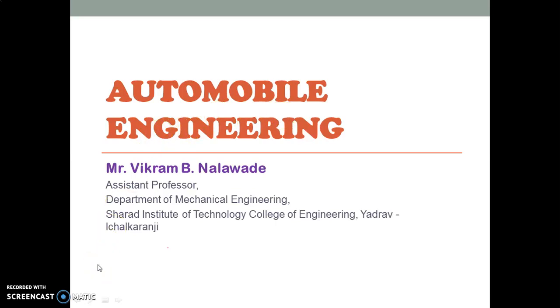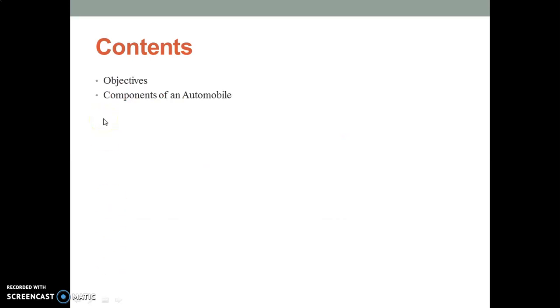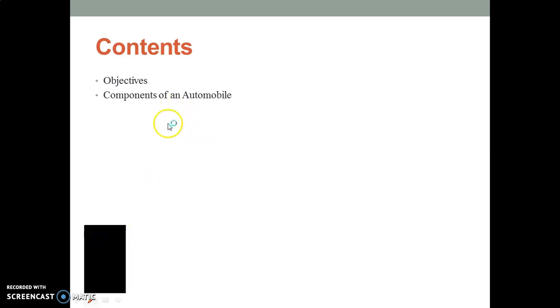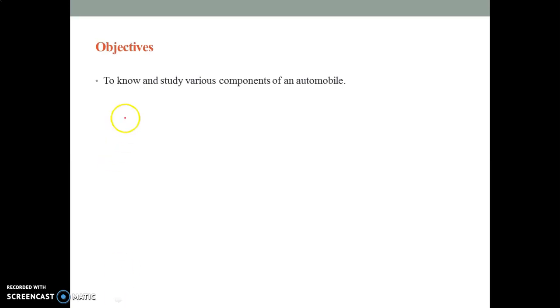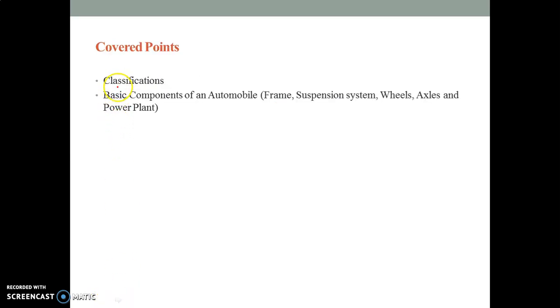In the previous lecture we have covered trains, suspension systems, wheels, and axles. We will discuss what parts we have covered in previous lecture — the classic sections of automobiles and some basic components like the suspension system, wheels, axles, and the power plant, where total energy is developed inside the engine.